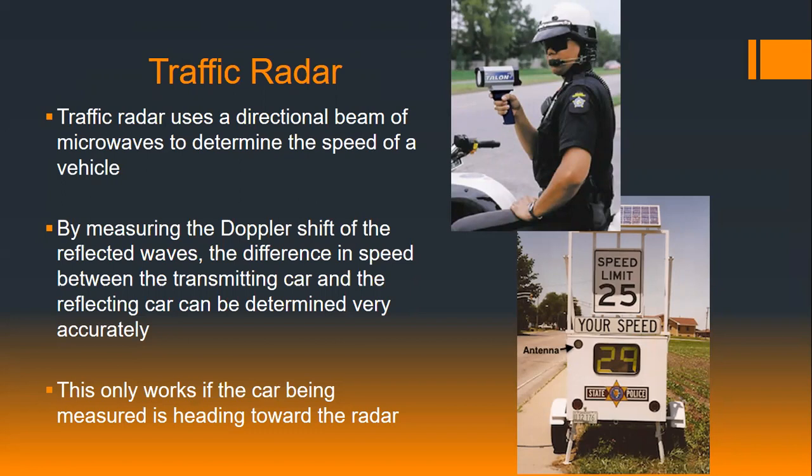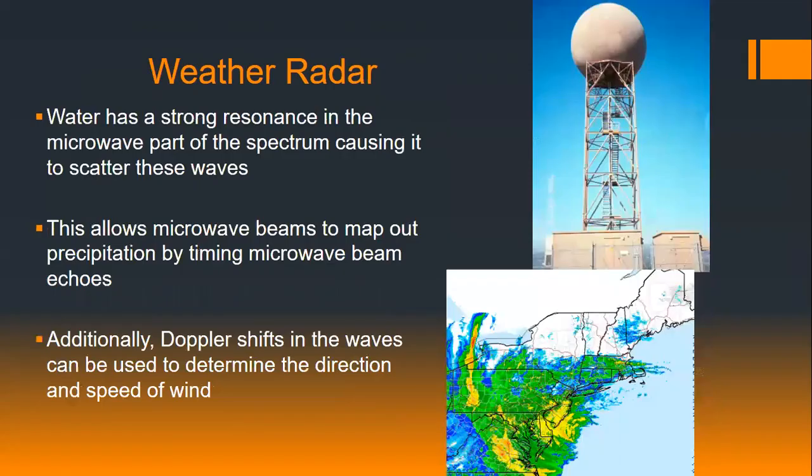The faster you're traveling toward or away from the microwave beam source, the more Doppler-shifted it becomes. Weather radar bounces a microwave beam off water molecules. As water falls in the form of precipitation, it reflects, rescatters, and absorbs microwaves. Even though water efficiently absorbs microwaves, it also scatters the microwave signal so we can create an image of what the precipitation is doing.